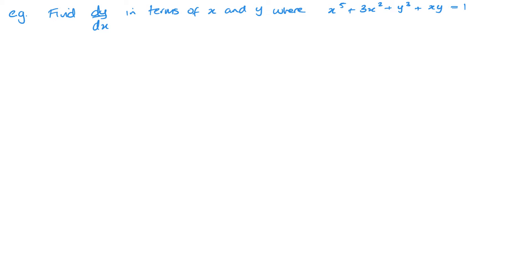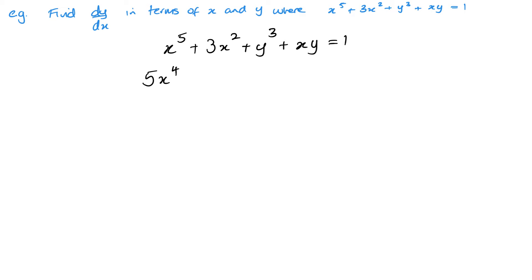Here's my first example, and I want to find dy by dx. I'm just going to rewrite this out here a little bit bigger so it's nice and clear. So I'm going to differentiate each term in turn. Differentiating x to the power 5, this is going to be 5x to the power 4 — remember you multiply by the power and then take 1 away from the power. Then we've got 3x squared, so it's going to give me 6x.